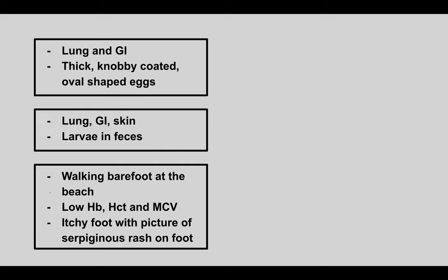The next patient can get lung and GI symptoms, and we see a thick, knobby-coated, oval-shaped egg. This is Ascaris lumbricoides — look out for a picture of a pathogen with a very thick coating around the egg, and symptoms like abdominal pain and hemoptysis. The next patient has lung, GI, and skin symptoms as well as larvae in the feces.